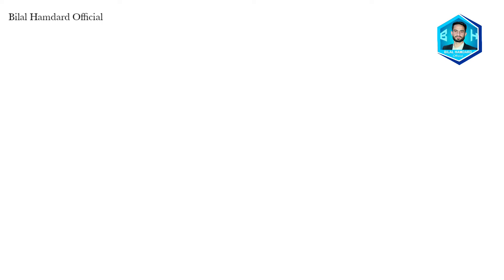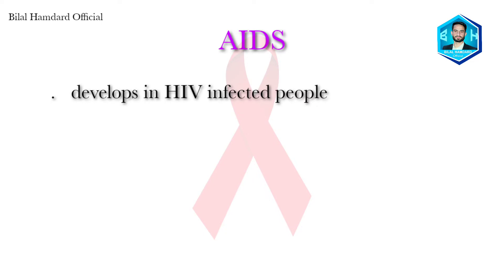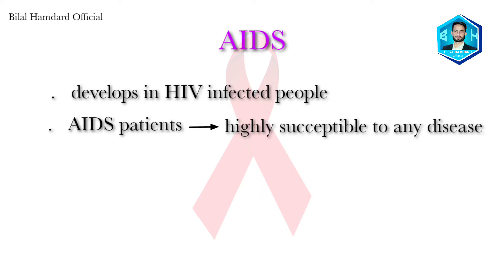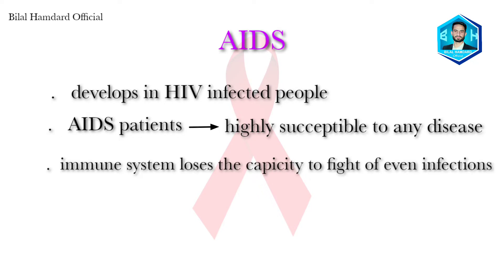AIDS develops in HIV-infected people when their immune system is severely compromised. The people suffering from AIDS are highly susceptible to any disease, as the immune system loses the capacity to fight off even acute infections efficiently.